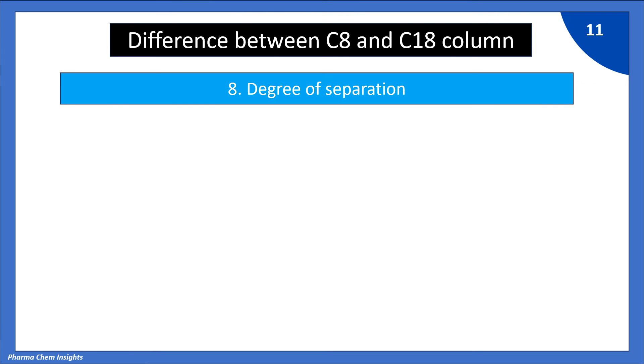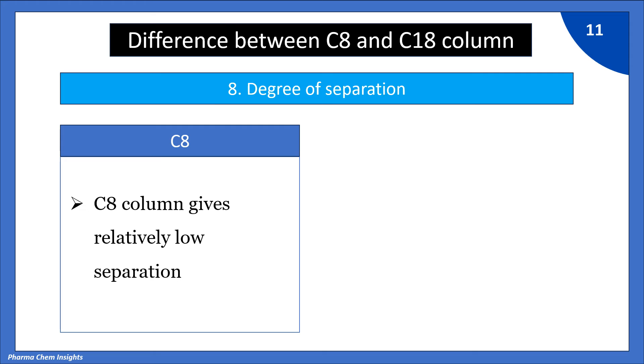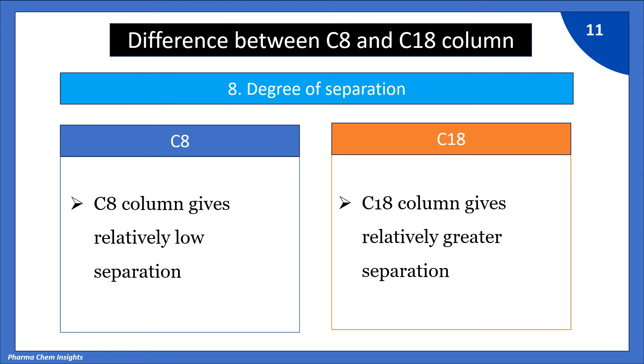8. Degree of suppression: C8 column gives relatively low suppression while C18 column gives relatively greater suppression.